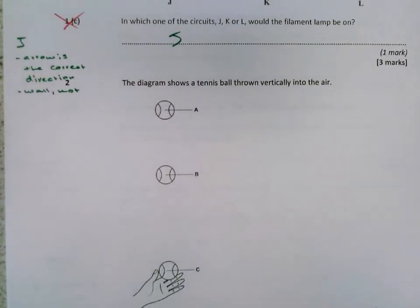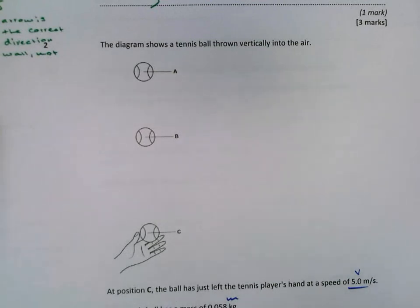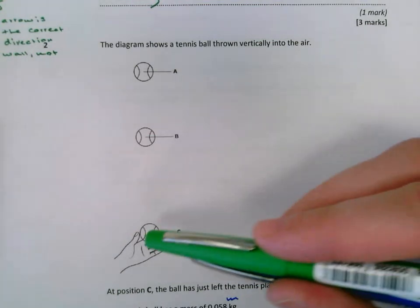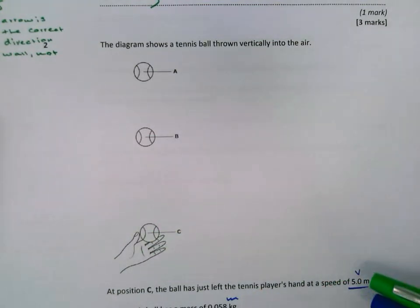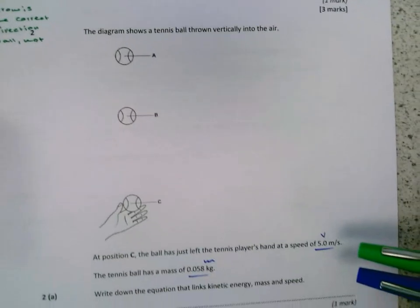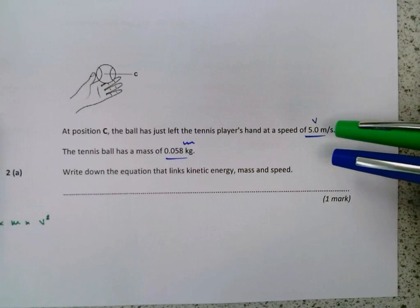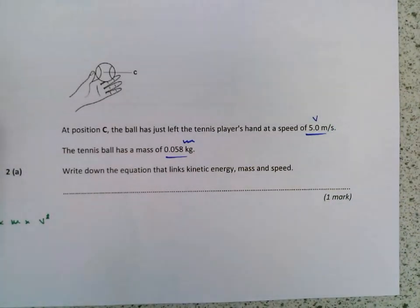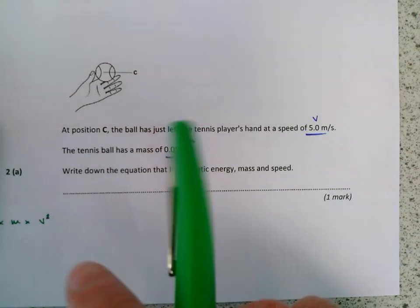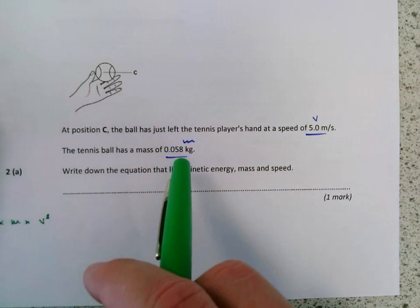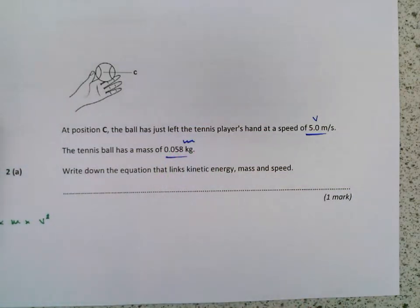Okay, moving on. We've got an energy question here. Throwing a tennis ball in the air. You can all imagine doing that. We've got a little diagram there. At position C, the ball's just left the tennis player's hand, and it's just left at a speed of 5 metres per second. So I've labelled that V. I've just used the term velocity, because we're going to be using that a little bit later. The tennis ball has a mass of 58 grams, but that's in standard units, 0.058 kilograms.